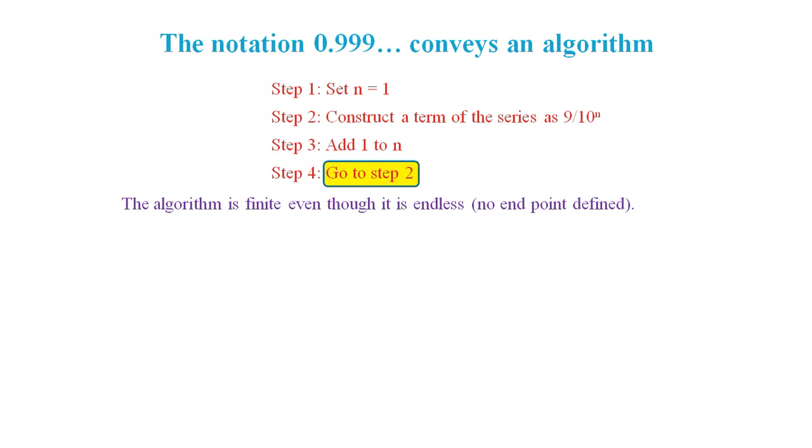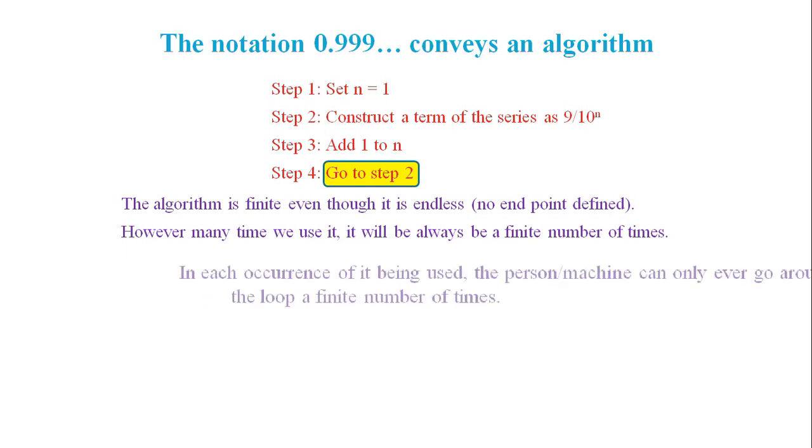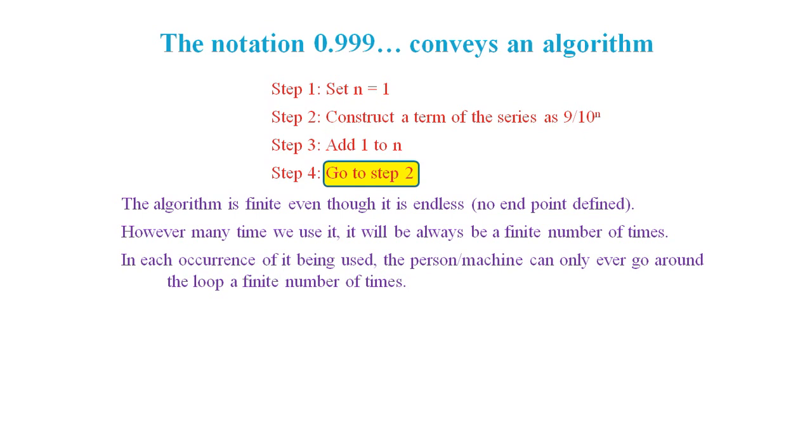It can be said to be endless in that it describes a process where no end point is defined. In step 4, it says to jump back to step 2. And so there's no instruction that says stop the process. We may have used this in the past and we may use it many times in the future. But however many times we use it, it will always be a finite number of times. Every time it's used, the machine or person following the algorithm can only go around the loop a finite number of times.